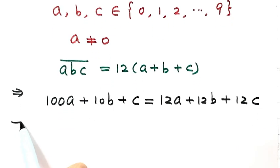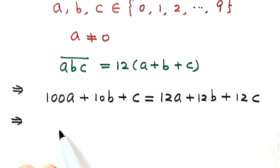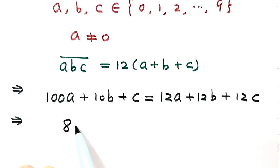Now let's bring everything from the right-hand side to the left-hand side and simplify. Then we get 88A - 2B - 11C = 0.